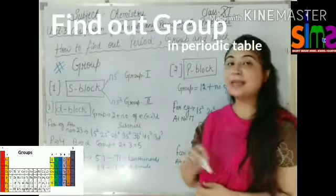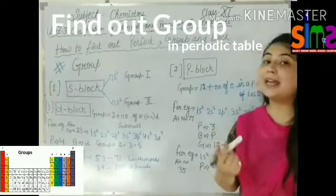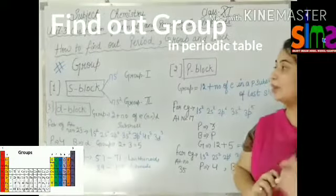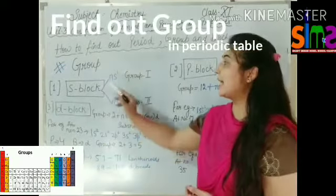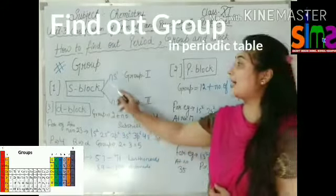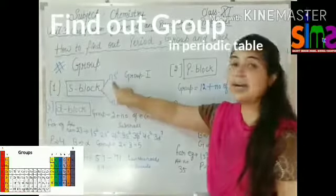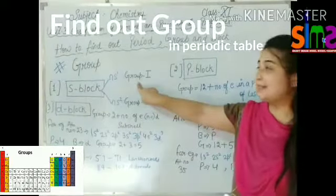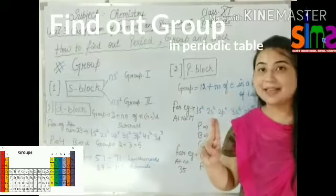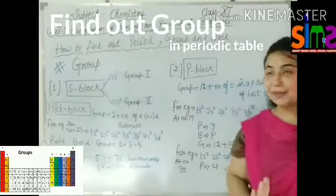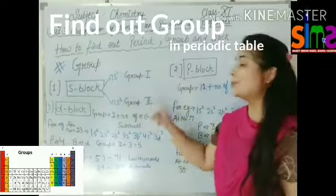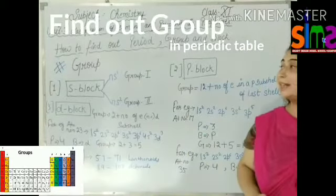अगर s-block का element है — यानि s-block में atomic number present है — और उसका configuration ns1 या ns2 आ रहा है, जहाँ n आपका principal quantum number है: अगर ns1 है तो वो Group 1 का element है, और अगर ns2 आ रहा है तो वो Group 2 का element है। तो s-block के elements आप आसानी से configuration देखकर बता देंगे।